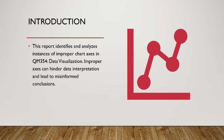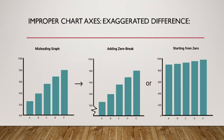Improper chart axes: exaggerated difference. Definition: this occurs when the scale of an axis is manipulated to visually make a difference between data points appear larger than it actually is. This can be achieved through techniques like non-linear scales, using a logarithmic scale for small differences or an exponential scale for minor changes.